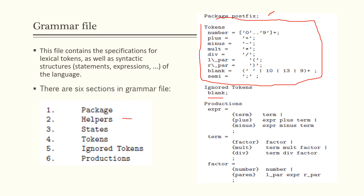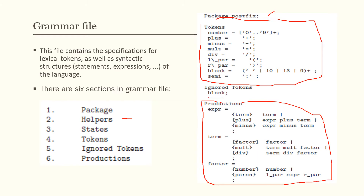Then we have productions. Productions is where you create or write the expressions, which is the grammar — the production rules of your grammar. These are written in the form of Backus-Naur Form (BNF). The format uses Backus-Naur Form for the grammar production rules.